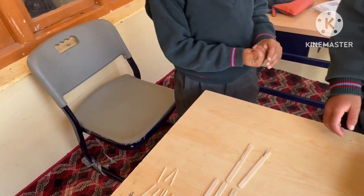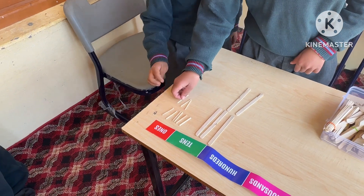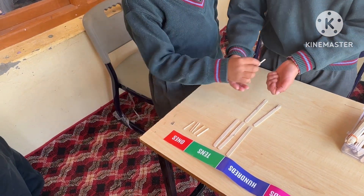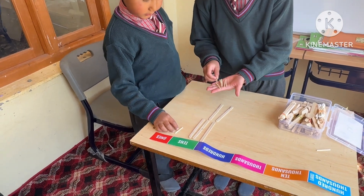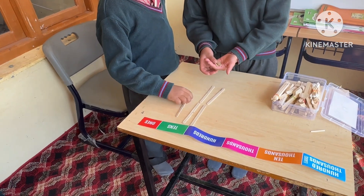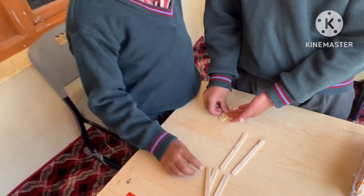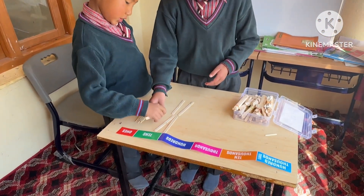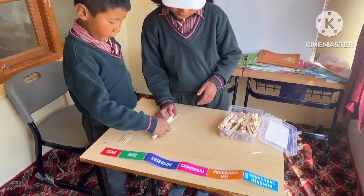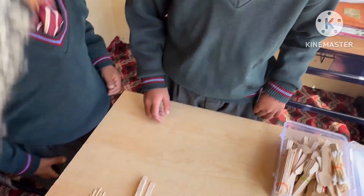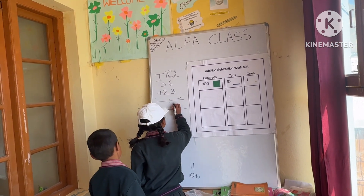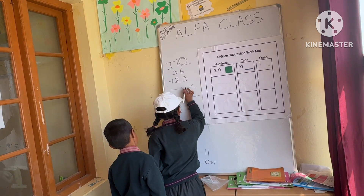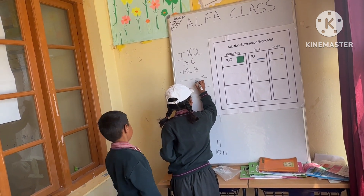How many are you? 1, 2, 3, 4, 5, 6, 8, 9. How many are you? 9, 1, 9, 1. 10, 1. 1, 2, 3, 4, 5. How many are you? 5, 1, 1, 1, 1. 1, 2, 1, 2, 1, 2, 1, 2.